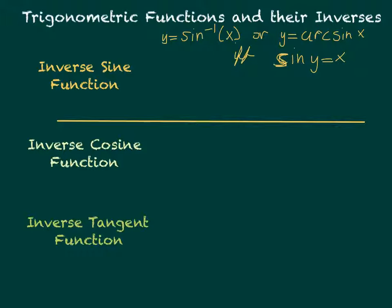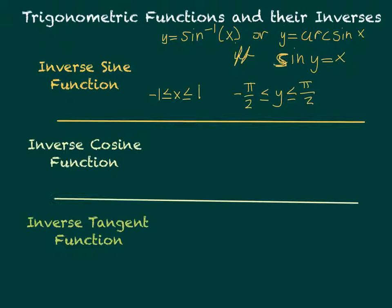The key thing to remember is we still need these to be functions, so they must pass the vertical line test. The domain is negative 1 ≤ x ≤ 1, because the range of the original sine function was negative 1 to 1. The original sine domain was infinite, so we cut it off. The range is negative pi over 2 ≤ y ≤ pi over 2, where no y-value repeats.